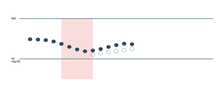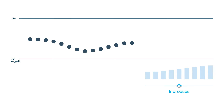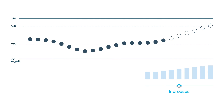Basal insulin delivery will resume once your glucose is predicted to be above 70 milligrams per deciliter 30 minutes in the future. When Control IQ technology predicts that your glucose will be above 160 milligrams per deciliter 30 minutes in the future, basal insulin delivery will be increased.